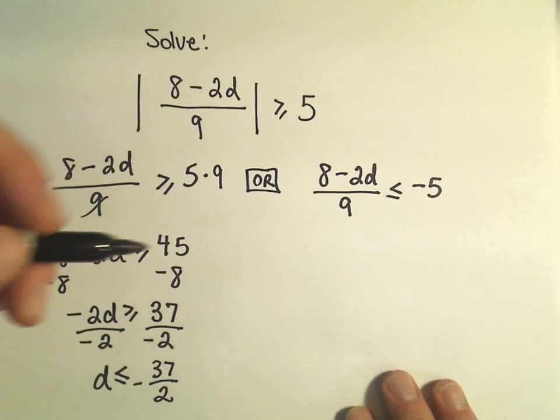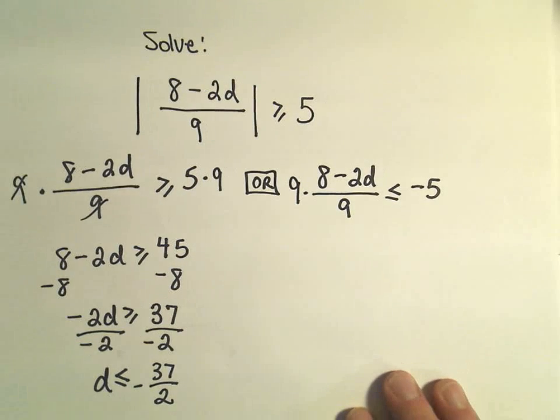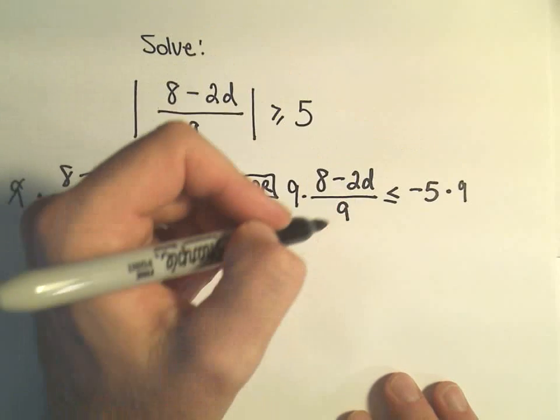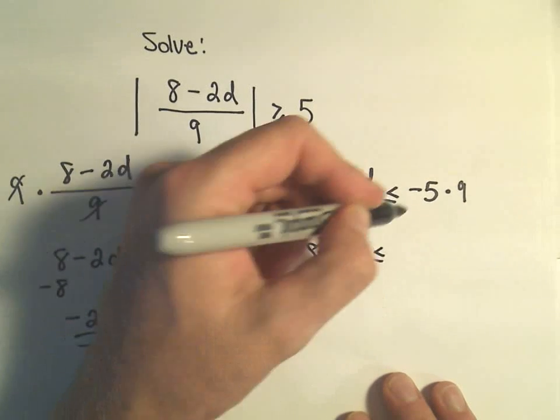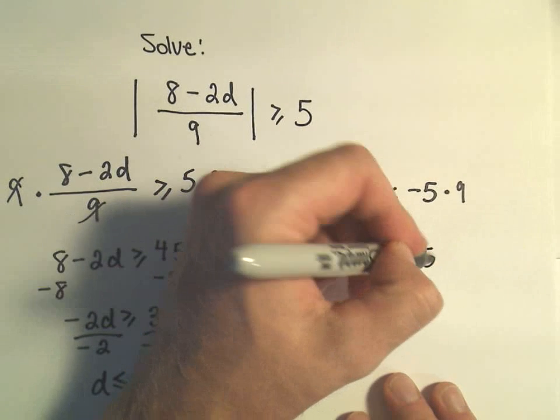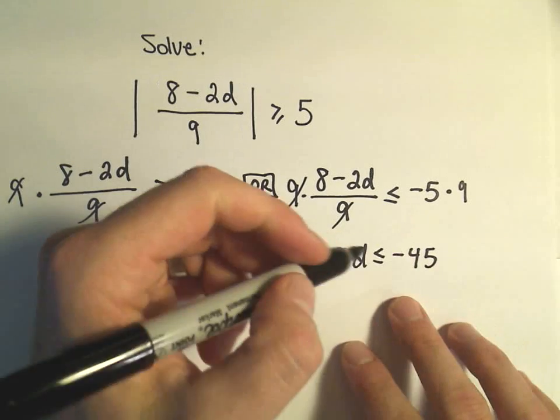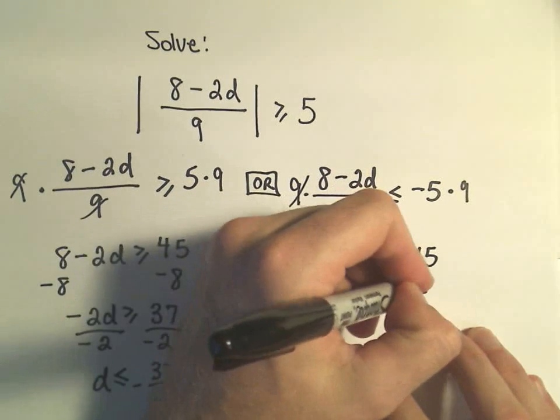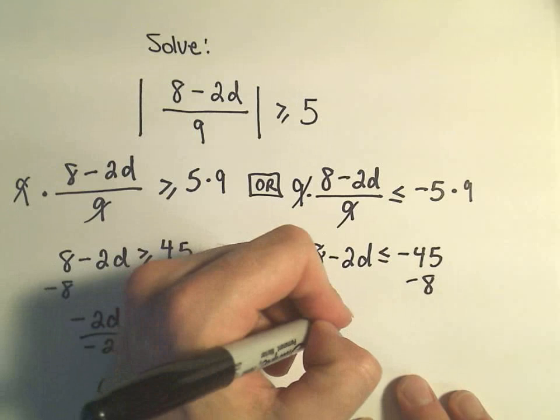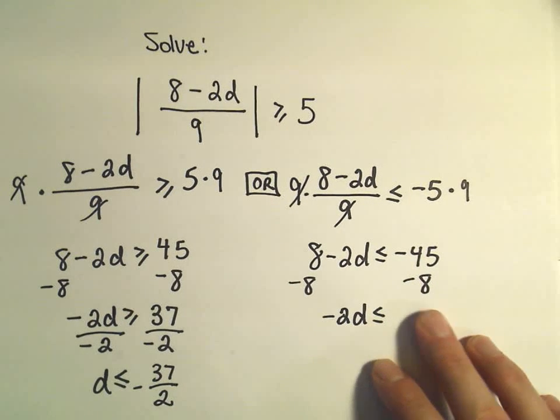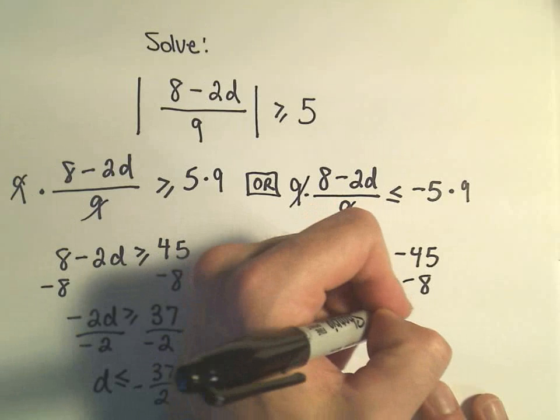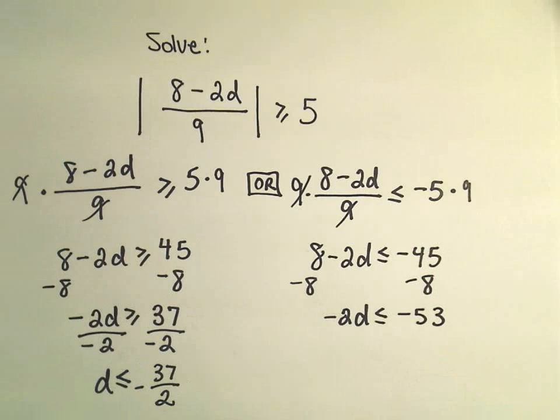We'll do the same thing on the other inequality. Just multiply both sides by 9. That will cancel out the 9's on the left. We have 8 minus 2d less than or equal to negative 45. If we subtract 8 from both sides, I'll have negative 2d less than or equal to negative 53. So negative 45 minus 8.